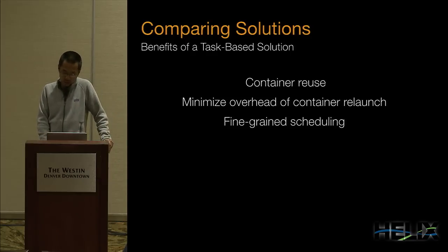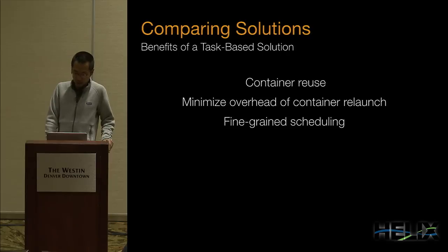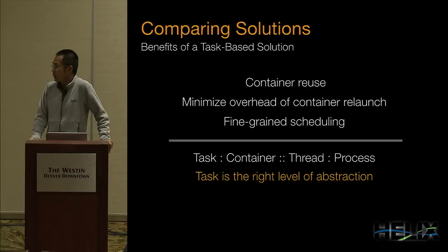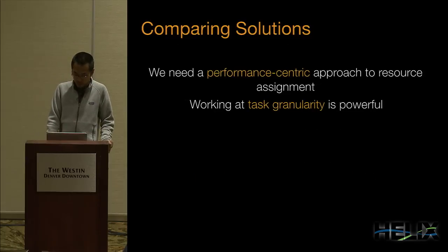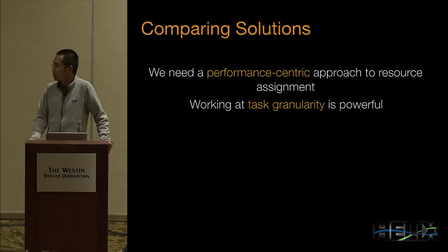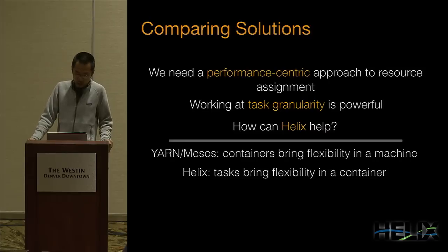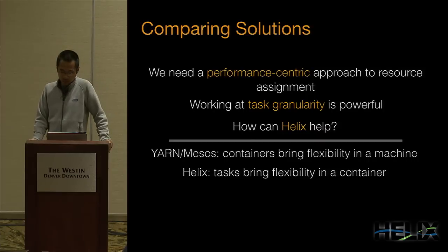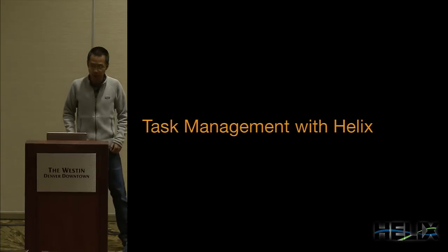The benefits of the task-based solution include reusing containers, minimizing the overhead of relaunching containers, and providing fine-grained scheduling. We can compare tasks to containers in a similar way we compare threads to processes — tasks are the more appropriate level of abstraction. We need a more performance-centric approach to resource management. Systems like Yarn and Mesos provide containers which bring flexibility inside each machine, while Helix can bring the concept of tasks, which brings more flexibility in terms of resource allocation inside a container.